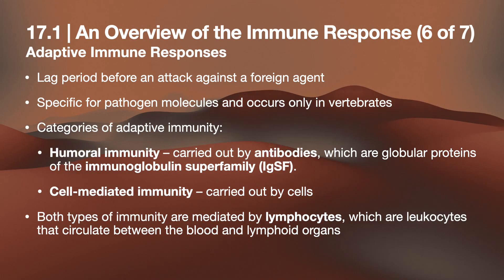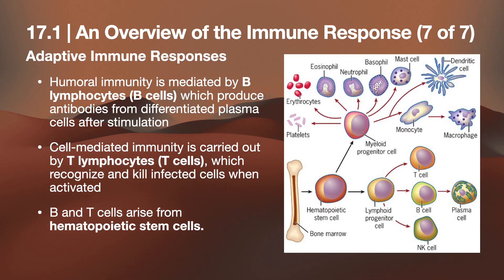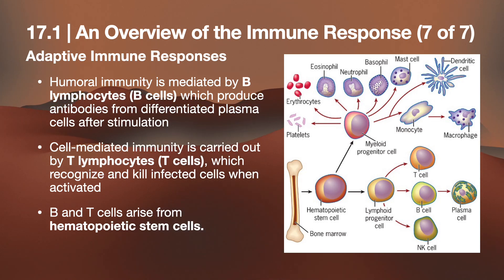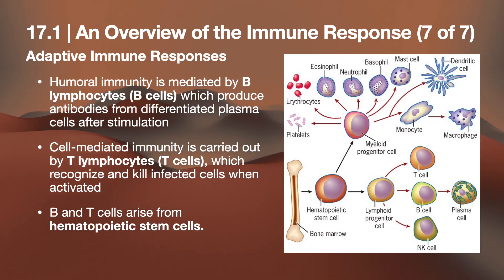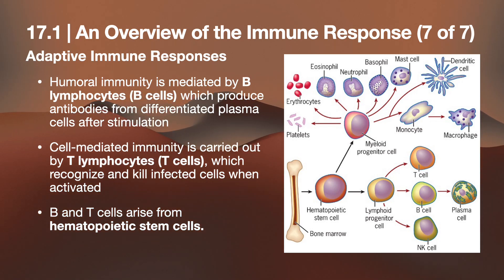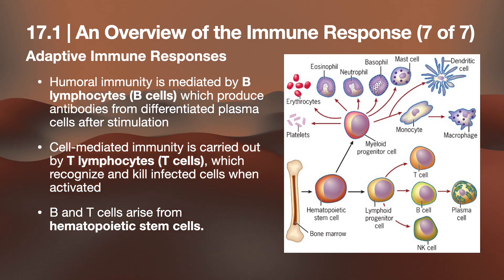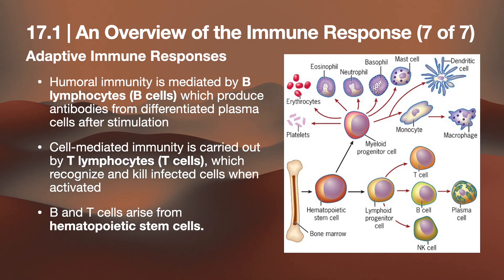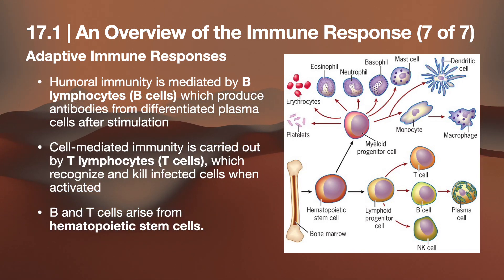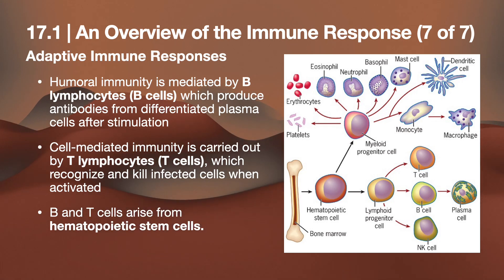Leukocytes circulate between blood and lymphoid organs. Humoral immunity is mediated by B lymphocytes, which produce antibodies from differentiated plasma cells after stimulation. Cell-mediated immunity is carried out by T cells, which recognize and kill infected cells when activated. Both arise from hematopoietic stem cells in the bone marrow, which can differentiate into myeloid progenitor cells — giving platelets, erythrocytes, eosinophils, neutrophils, basophils, mast cells, and monocytes — or lymphoid progenitor cells giving T, B, and NK cells.